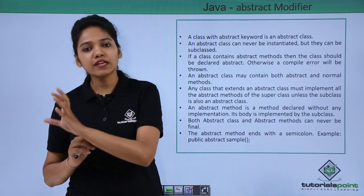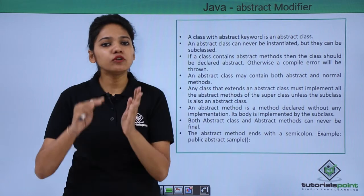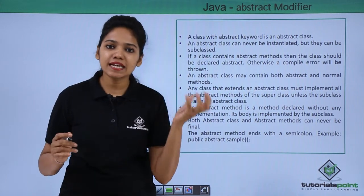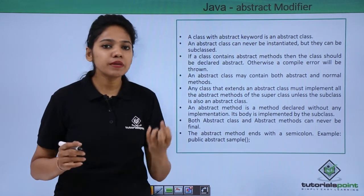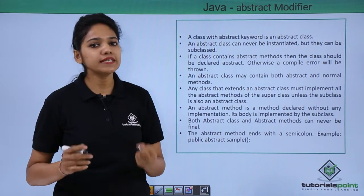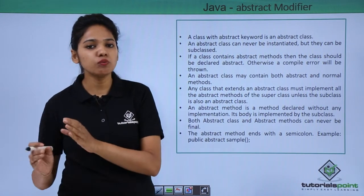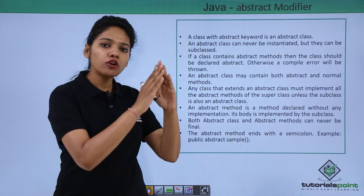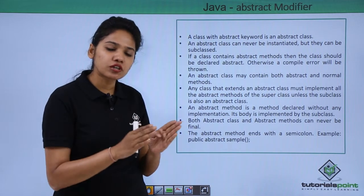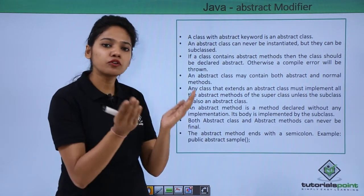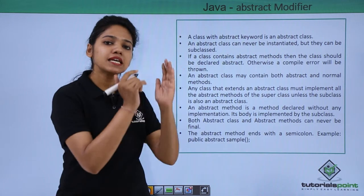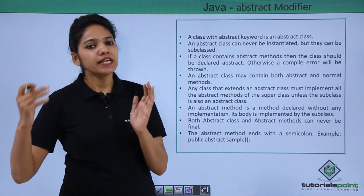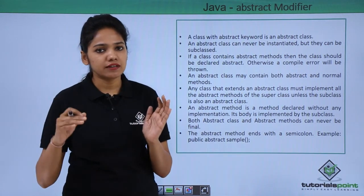You define all the implementation details in another class. You extend the abstract class and implement all these methods in the class where you want to define them. You provide the outline or portrait of a class in one place, then define that portrait in another class.